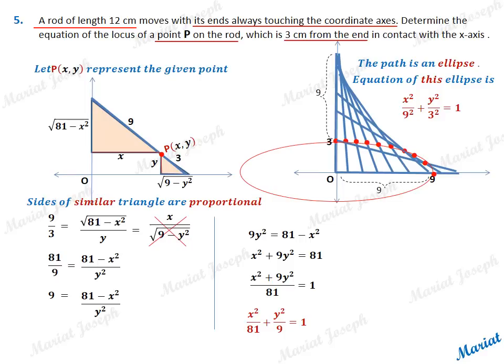81 by 9 equals 81 minus x squared upon y squared. That is, 9 equals 81 minus x squared upon y squared. So 9y squared equals 81 minus x squared, giving us x squared plus 9y squared equals 81.